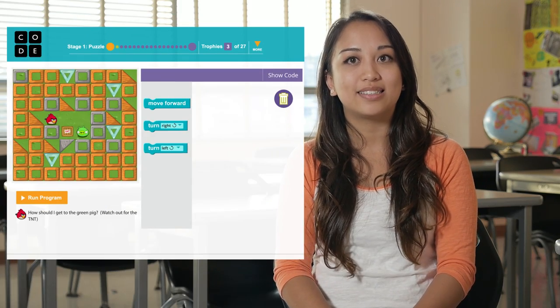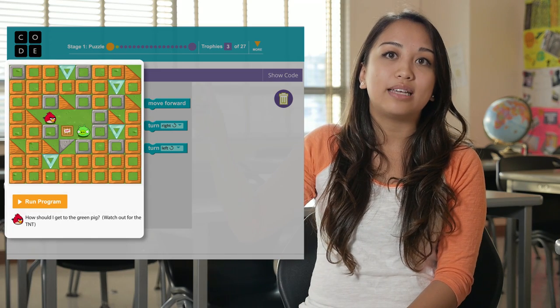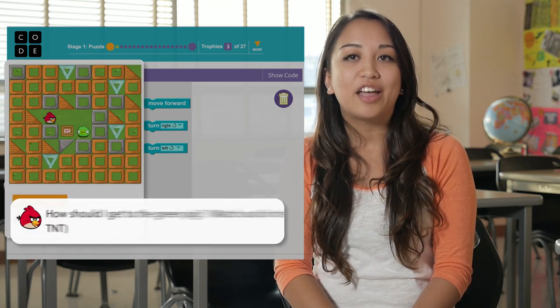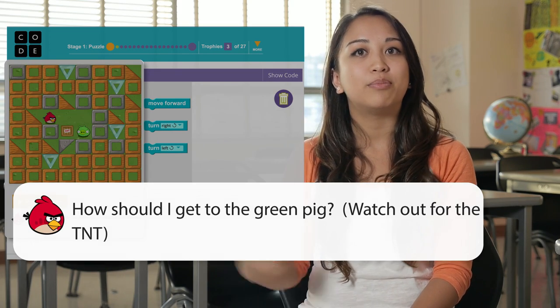Blockly is split into three main parts. On the left is the bird's maze where your program will run. The instructions for each level are written below the maze.